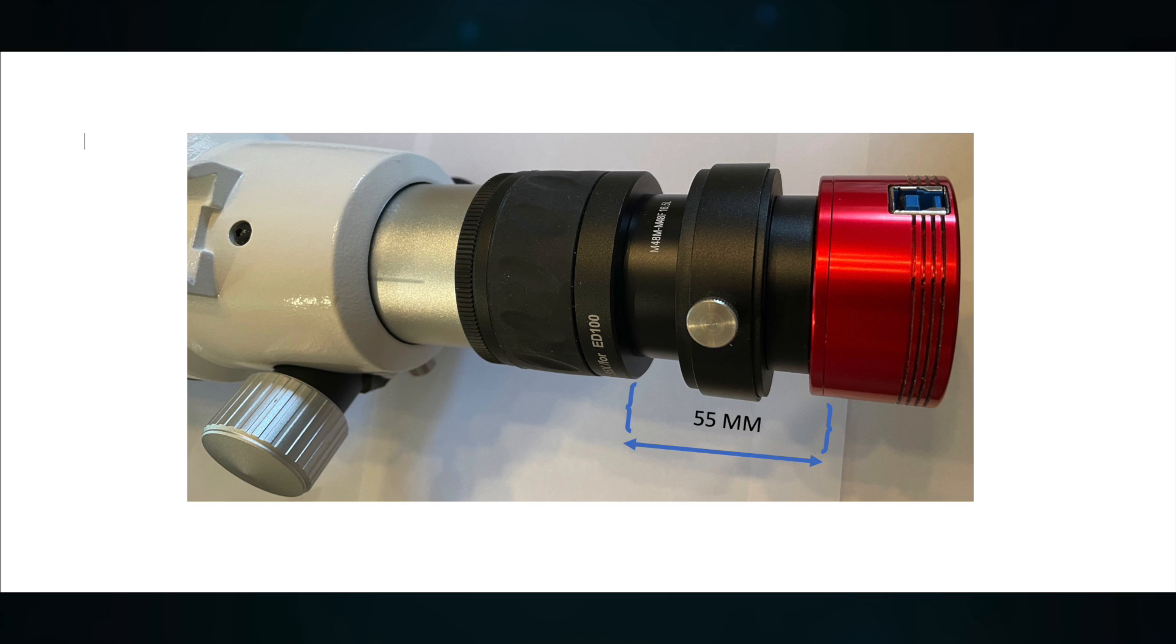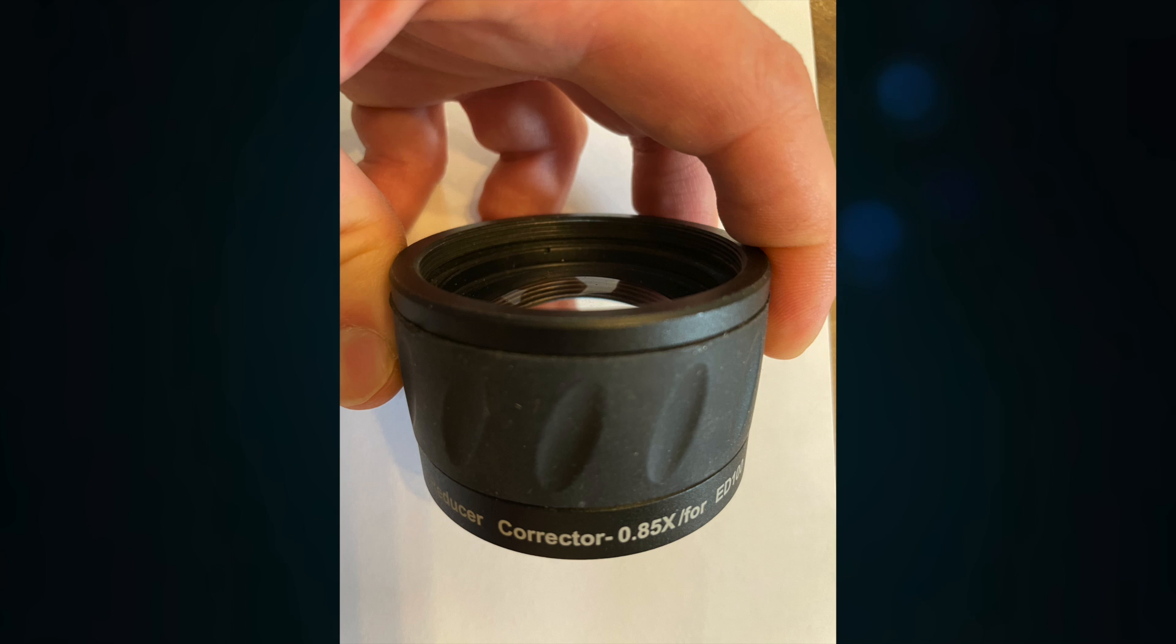But if you think about it, since I didn't take into account the depth of the CMOS sensor, my back focus was actually too long because I had almost exactly 55 millimeters of tubing and then plus the 6.5 millimeters that the camera sensor is recessed inside the camera.